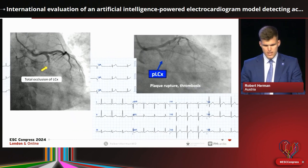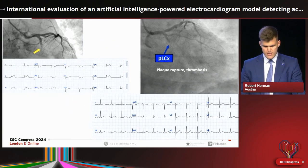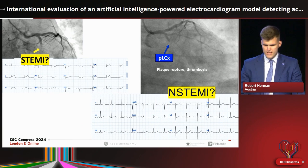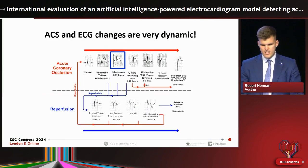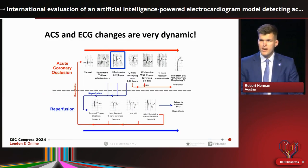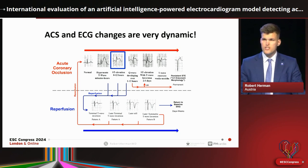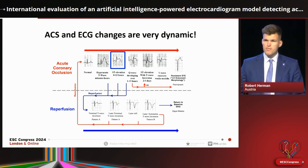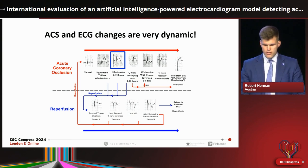So why are we calling the patient on the left a STEMI patient, while the patient on the right is a non-STEMI under the current paradigm? This is exactly the problem: ACS and ECG changes are very dynamic, and the current paradigm really focuses on one dominant feature of acute coronary occlusion, which is ST elevation.